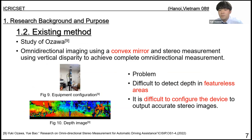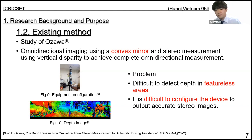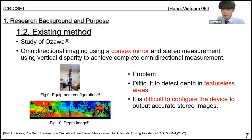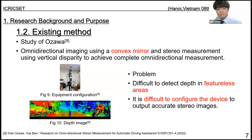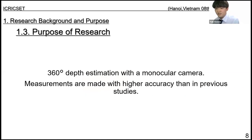In a previous study conducted by the authors, omnidirectional imaging used a convex mirror and stereo measurement using that curve, achieving complete omnidirectional measurement. However, it is difficult to detect depth in distant areas. So in this research, 360-degree depth estimation with a monocular camera is proposed, aiming to achieve higher measurement accuracy than in previous studies.